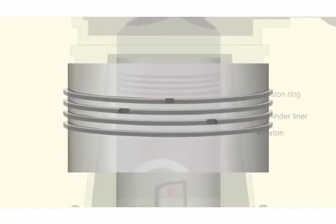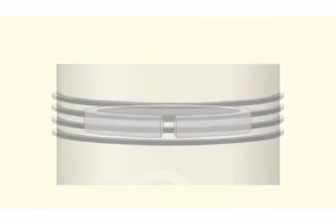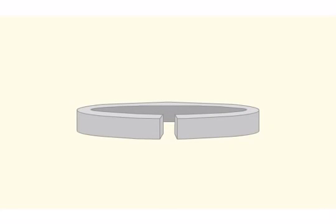Butt clearance is also known as ring end clearance or gap clearance. It is the distance between the connecting faces of piston ring. This clearance should be within the limits specified by the engine manufacturer.